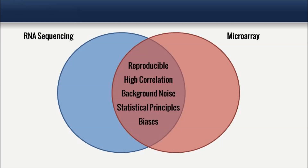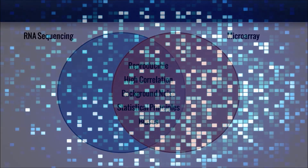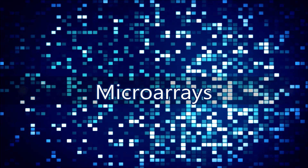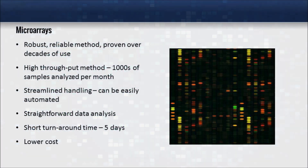Last, both methods suffer from biases. For microarrays, the biases such as variants are well understood. For sequencing, a much newer method, biases have been observed; however, the source of these biases are not yet well understood. Microarrays are a robust, reliable method proven over decades of use. Over the years we have become comfortable both with operating this technology and analyzing the results.